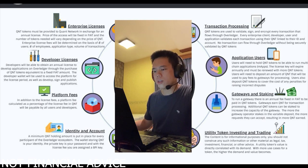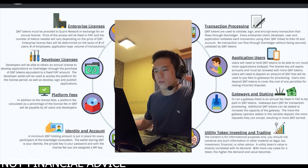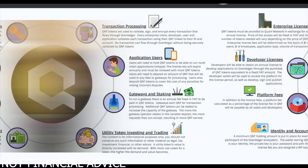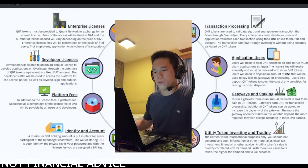Number two, the QNT token can be used for developer licenses. Developers will be able to obtain an annual license to develop applications on Overledger through the purchase of QNT tokens equivalent to a fixed fiat amount. The developer wallet will be used to access the platform for the license period, as well as develop, sign, and publish applications.